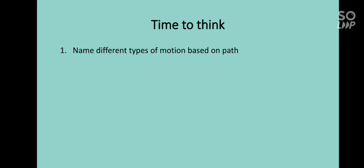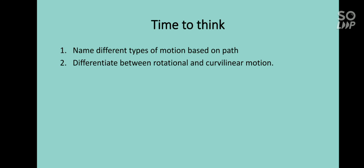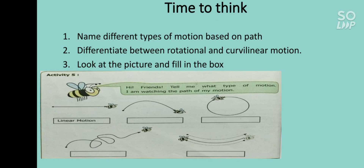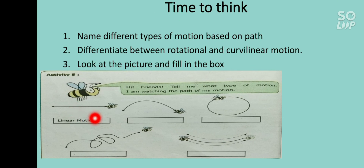That's it for this video on types of motion based on path. Now it's time to think and answer. First question: name the different types of motion based on path — the answer is given in this video. Second: differentiate between rotatory and curvilinear motion. Third: look at the picture and fill in the boxes showing different forms of motion for a bee. First one is linear motion — the bee is moving in a straight line.